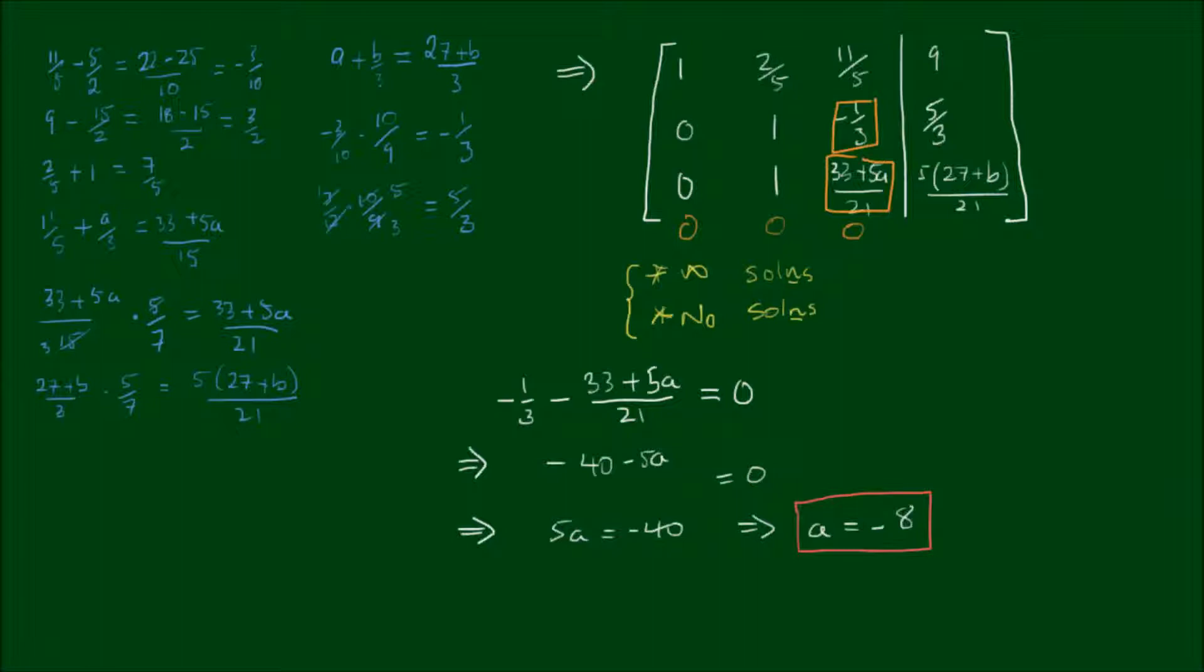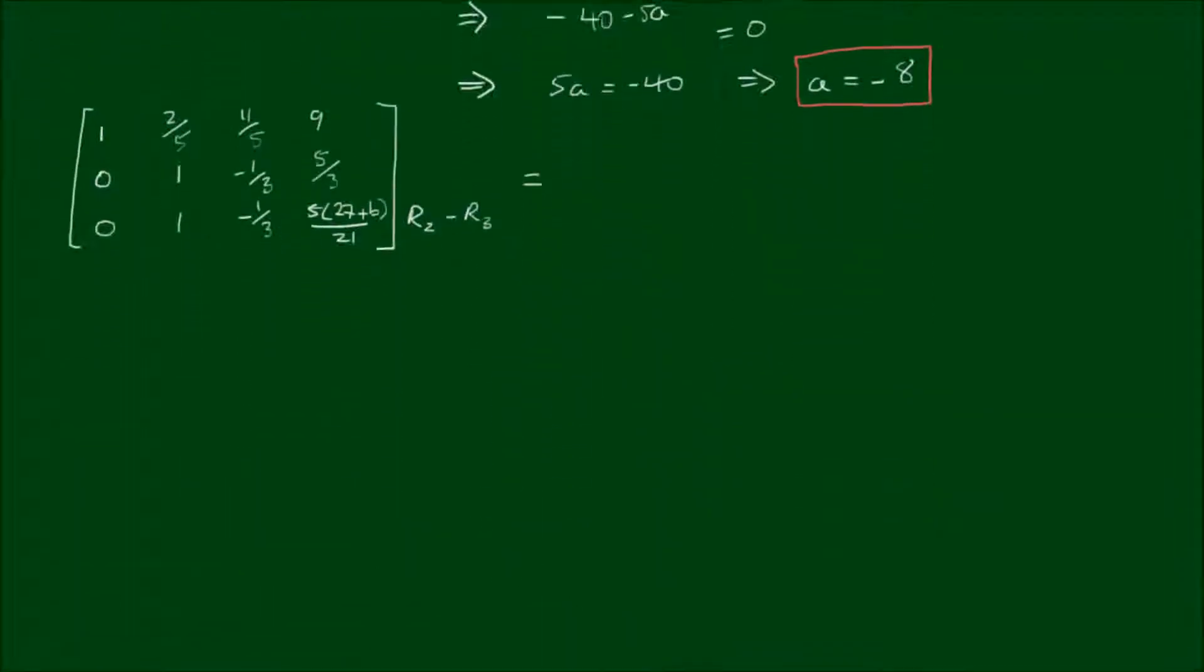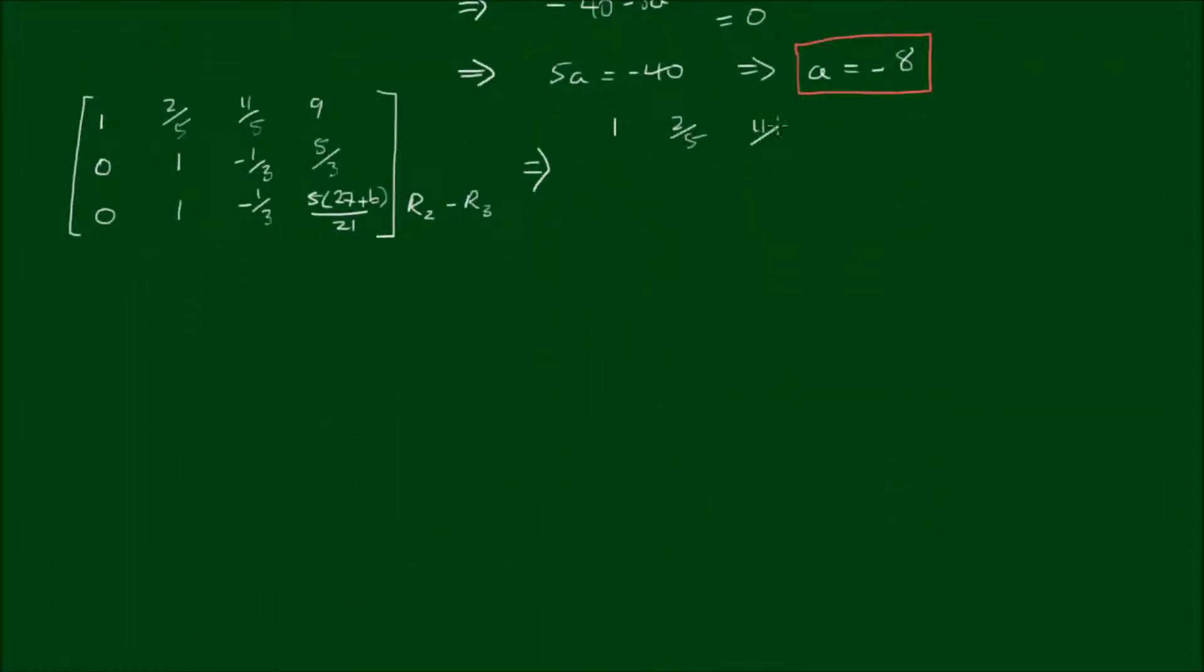Let's now move on to part B. I'll just copy the matrix that we have so far. And for the third row, 0, 1, let's substitute in negative 8. So we'll have negative 1 third here as well. And remaining, we have 5 outside of 27 plus B all over 21. Our final row subtraction is subtracting row 3 from number 2. So row 2 minus row 3.